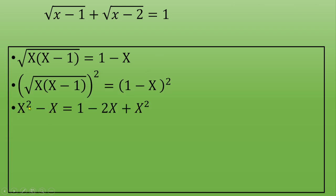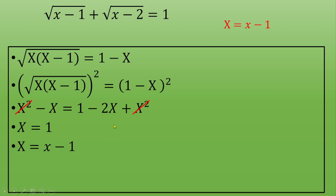Distributing gives capital X² minus capital X equal to 1 minus 2·capital X plus capital X². The capital X² terms cancel from both sides, and moving negative 2·capital X to the left gives capital X equal to 1.